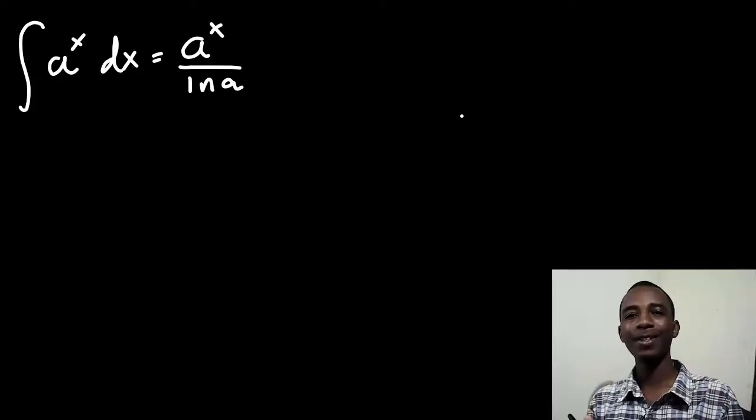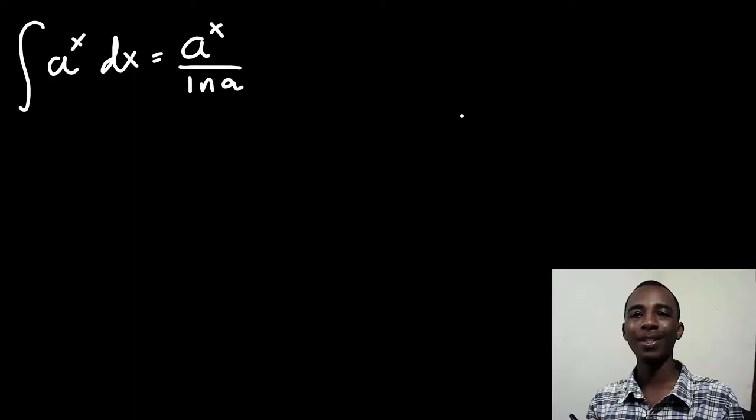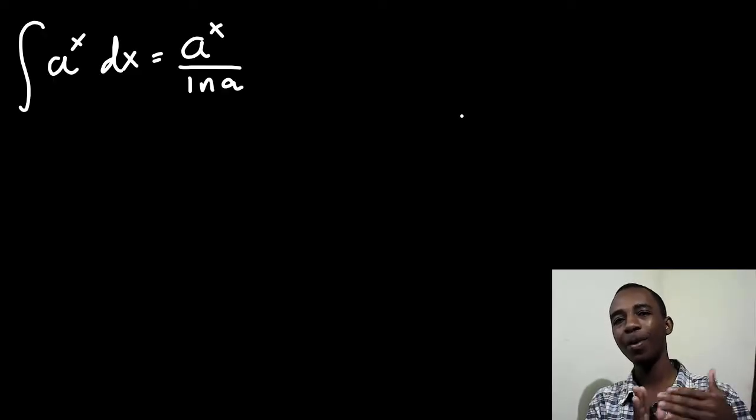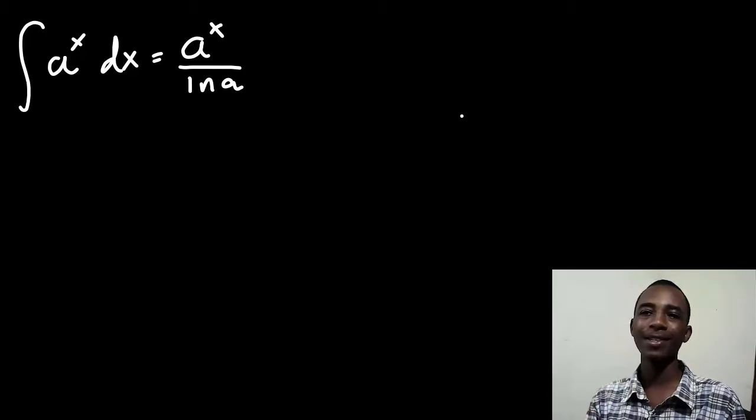Hi, so let's prove that the integral of a to the power x is a to the power x divided by natural log of a. Now, strictly speaking, there is no direct proof for this, but we'll try to move from the derivative of a to the power x as we look at its integral.